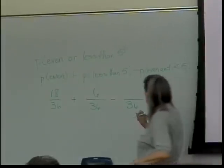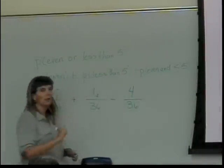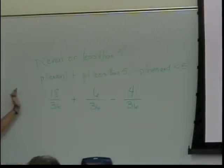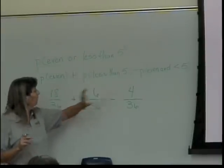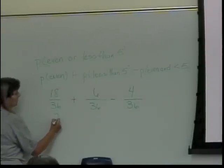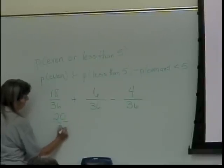So I've got to take those off because I counted twice. And so my probability of even or less than 5 is 18 over 36 plus 6 over 36 minus 4 over 36, which comes out to be 20 over 36.